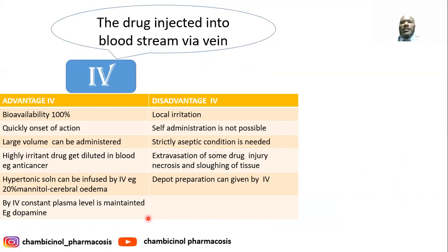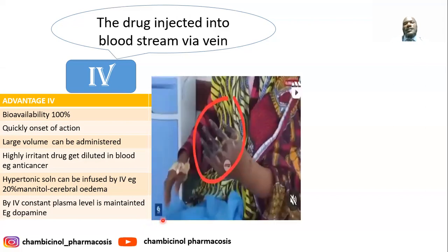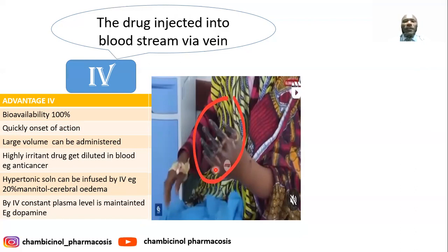The disadvantages of IV administration: can cause local irritation; self-administration is not possible; strictly aseptic conditions needed; extravasation of drug can lead to thrombophlebitis and necrosis of adjoining tissues. The image shows an example of necrosis after administration of ceftriaxone (marketed as RoActemra or a third-generation cephalosporin) due to extravasation during administration.